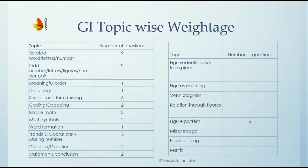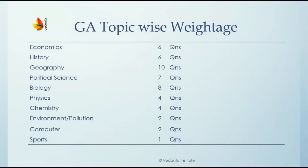Now let's take a look at the General Awareness section. It will cover many topics like current affairs and static GK sections such as economics, history, geography, general science, environment, computer science, etc. Analyzing this, the most important topic is geography, followed by general science — comprising biology, physics, and chemistry — which together account for 16 marks. Geography is a single topic, which is why it is the most important. So prepare in this order: geography, then general science, then political science, then history and economics.